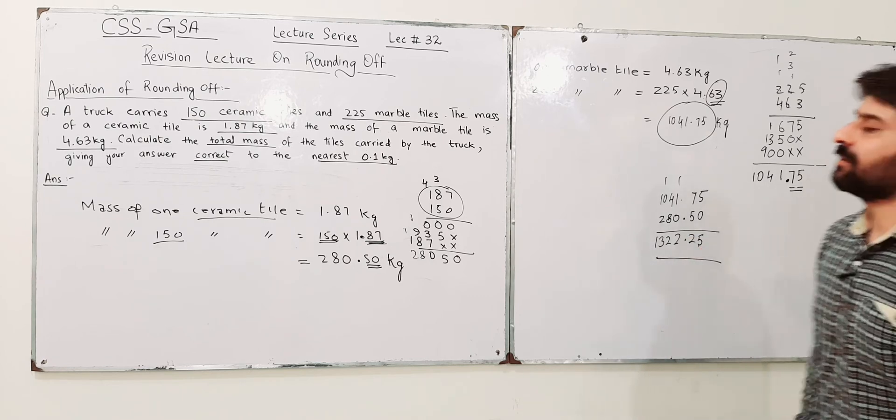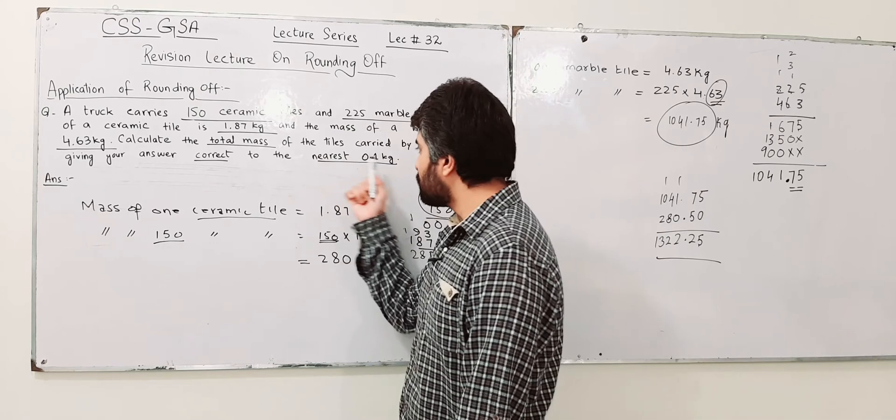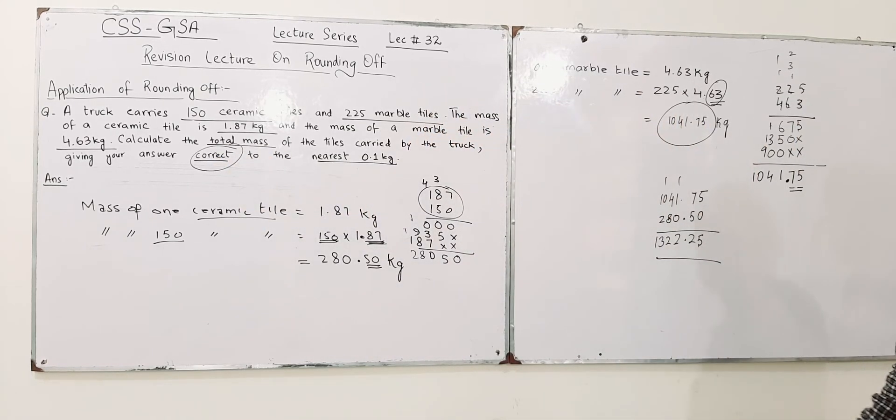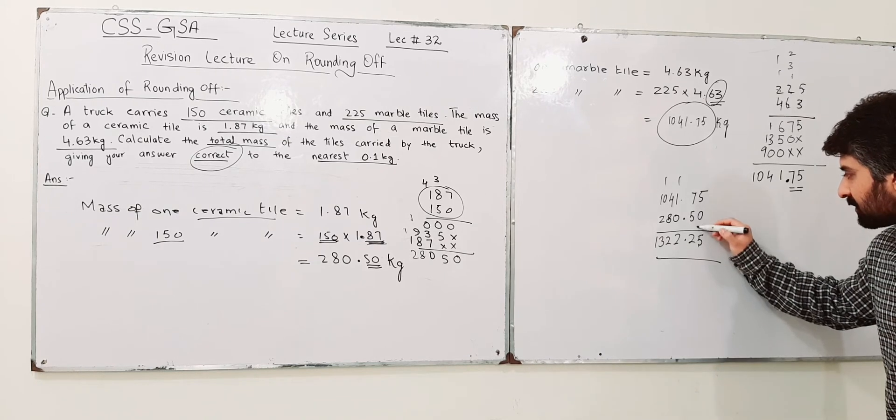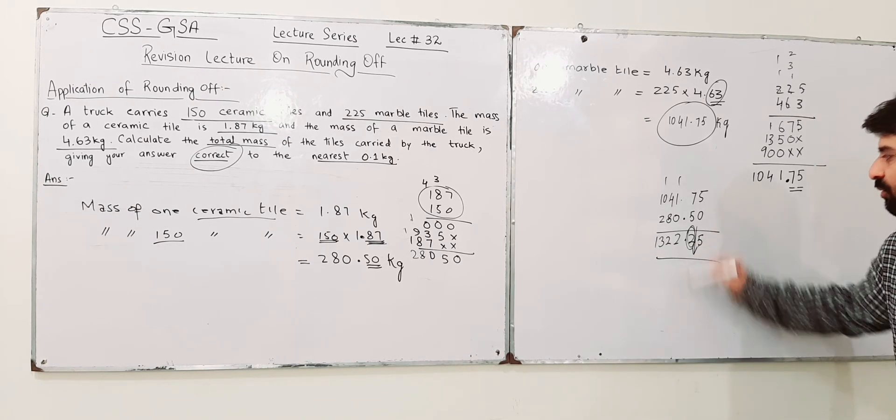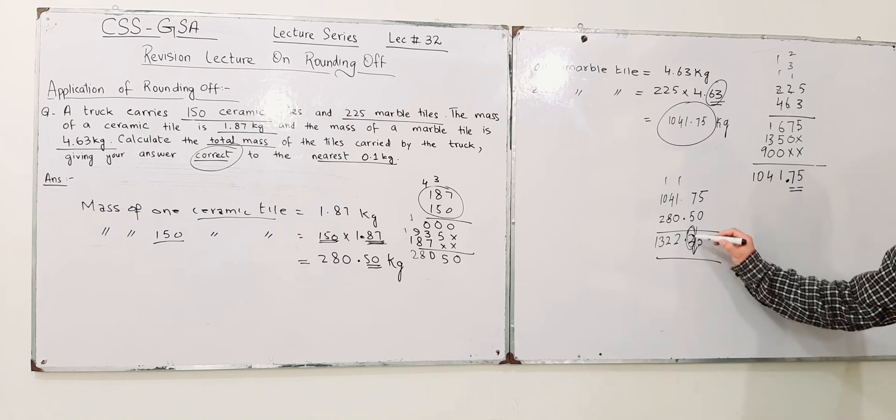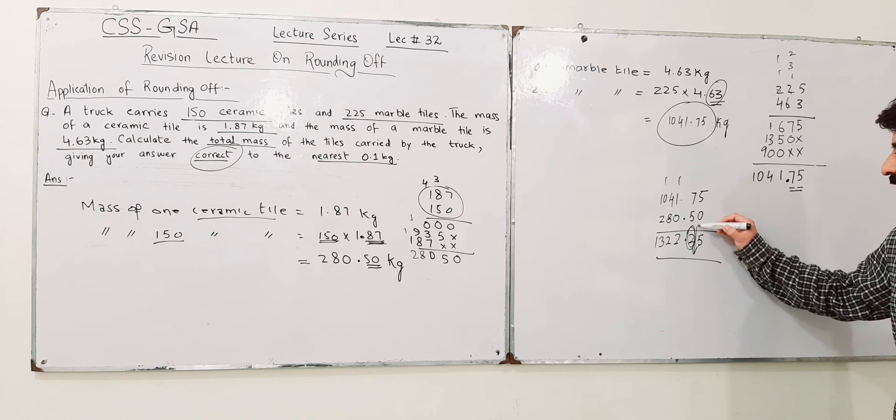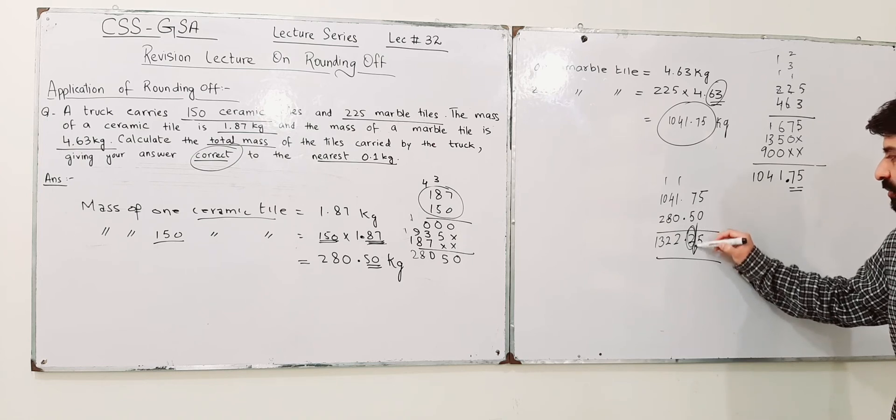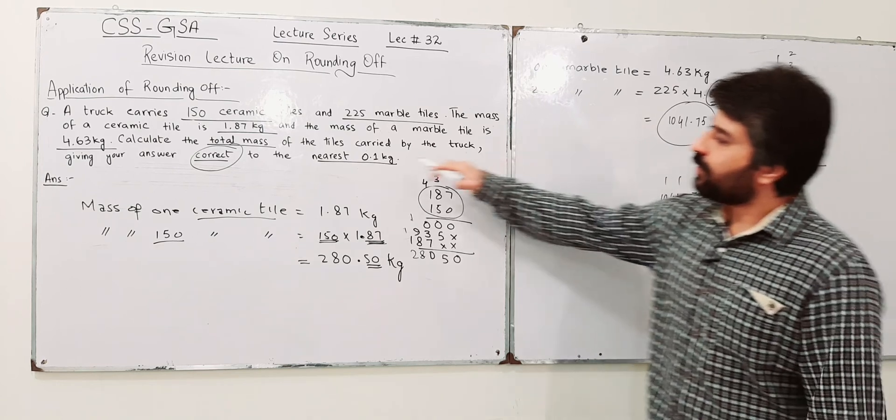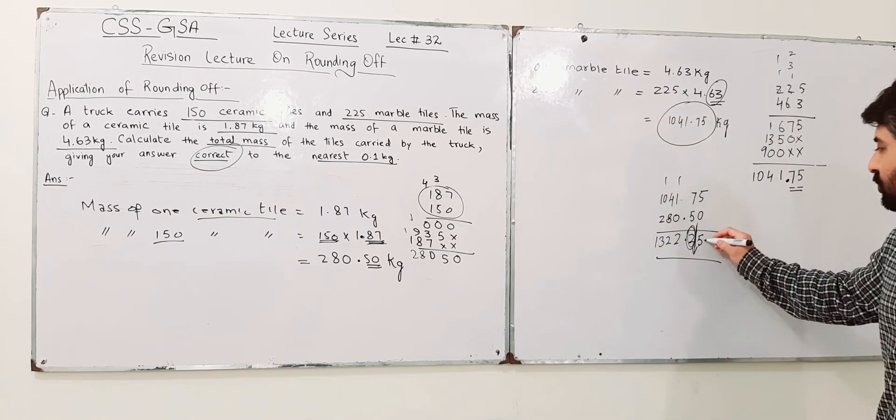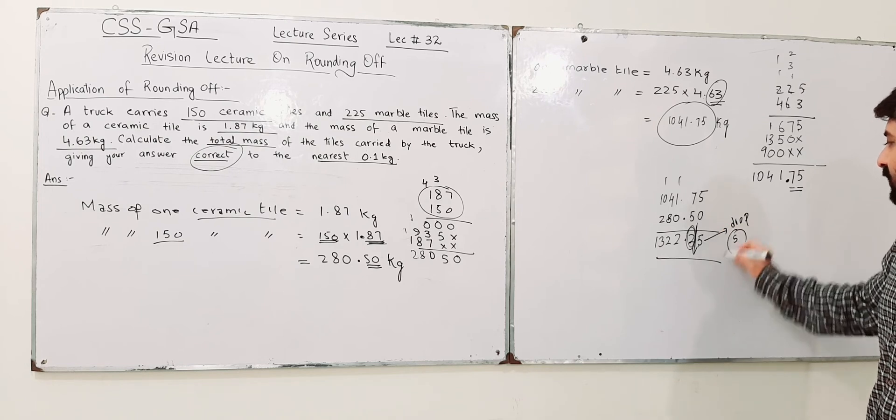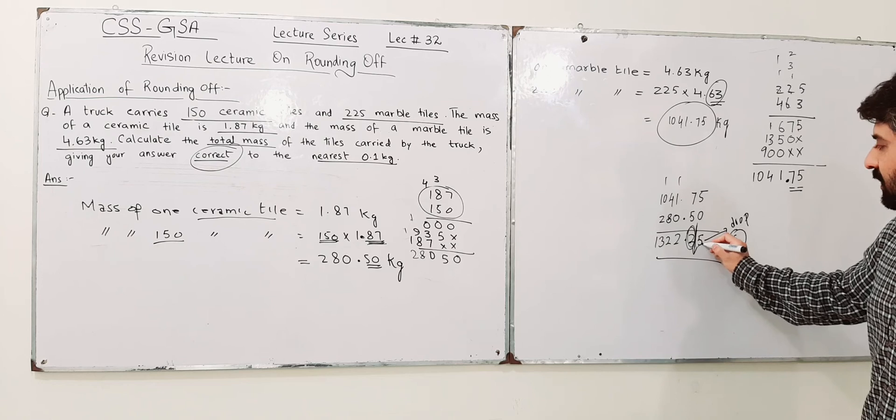This is not the final answer because I have to give my answer nearest to 0.1 kg. This is 0.1 kg, nearest to 0.1 kg. So you need to round up your answer after this point, after 1 decimal place, after 0.1 kg. So you need to drop this one.